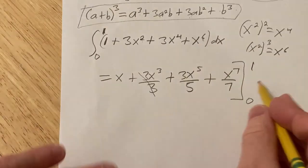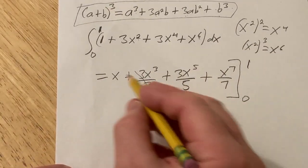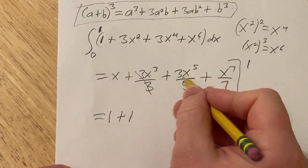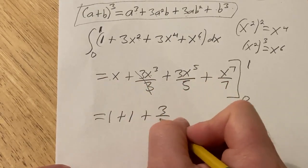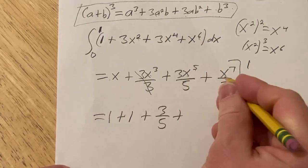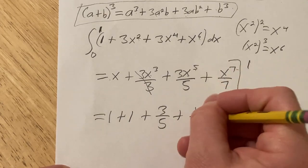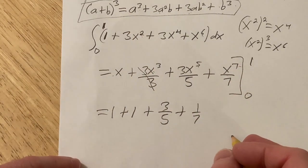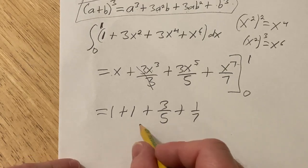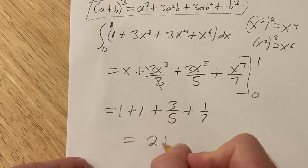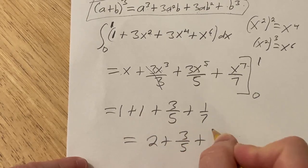All right, these cancel. Plug in the 1, subtract plug in the 0. So plugging in 1, we get 1 plus 1, because 1 cubed is 1, plus 3 fifths times 1 to the fifth which is 1, plus 1 to the seventh is 1, so just 1 seventh. So we have to add all this up. The easiest way to do it would be to write everything as a fraction with the same denominator. But first, let me add these. This is 2 plus 3 fifths plus 1 seventh.